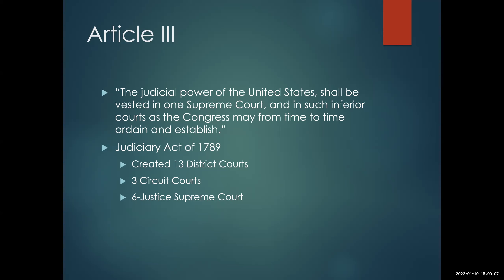As Article 3 passed the buck to Congress, Congress picked it up in 1789. One of the very first things the new Congress did was pass the Judiciary Act. The Judiciary Act created 13 district courts — one in each of the former colonies, in each of the states. Then it created three circuit courts, which are intermediate courts with geographic boundaries.